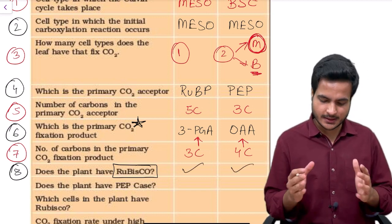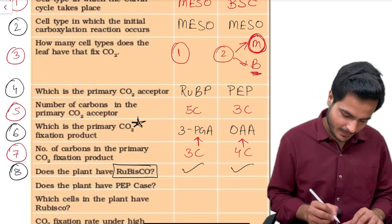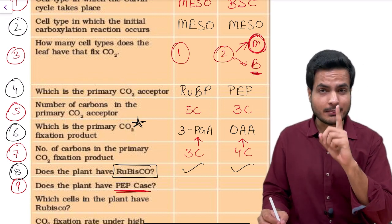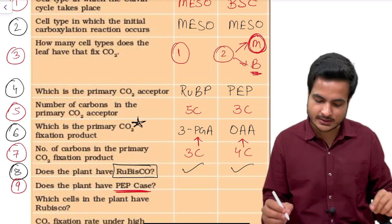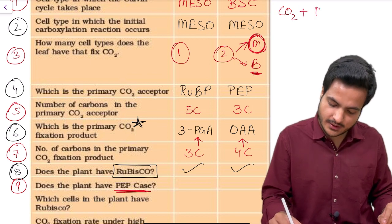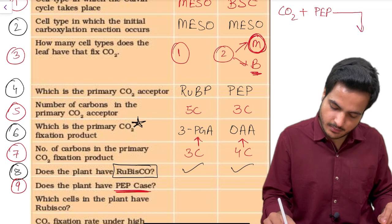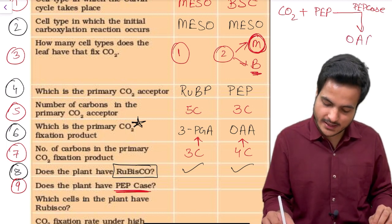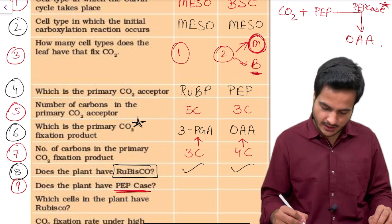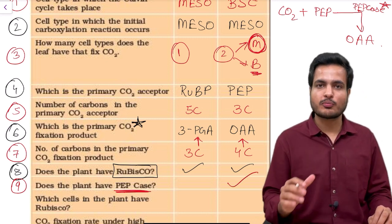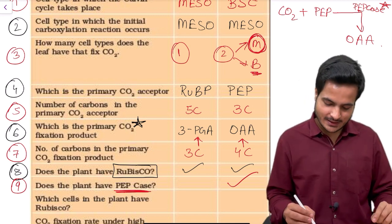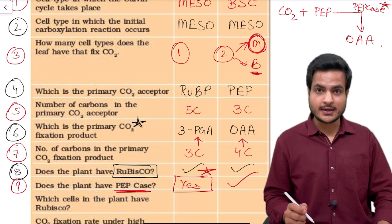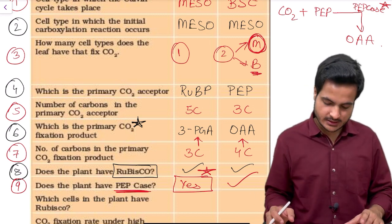The ninth question asks whether the plant has PEP carboxylase. PEP carboxylase is involved in the primary carbon dioxide fixation reaction in C4 plants, where carbon dioxide fuses with the three-carbon phosphoenol pyruvate to form the four-carbon oxaloacetic acid. So PEP carboxylase is present in C4 plants. But interestingly, PEP carboxylase is also present in C3 plants, although its role in C3 plants is not yet defined. It is present in both types of plants, similar to Rubisco.